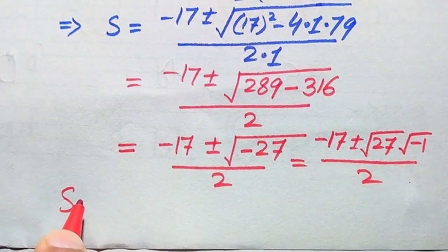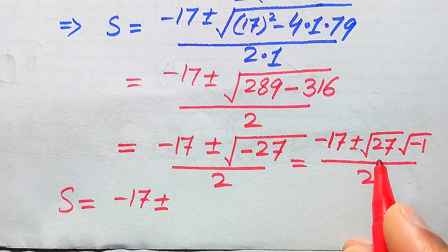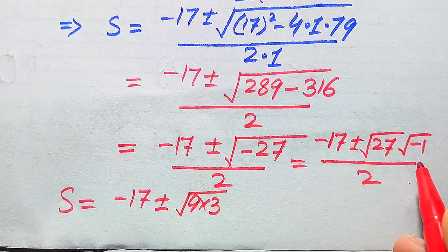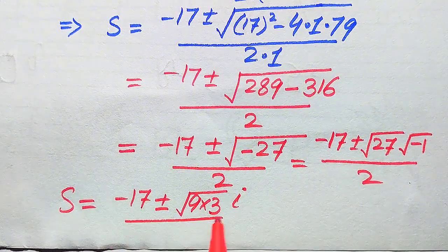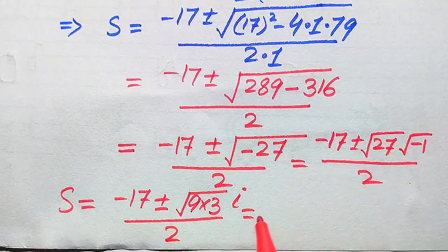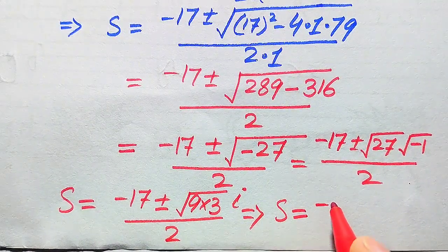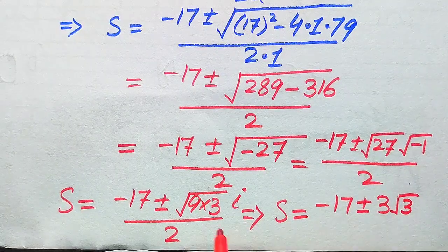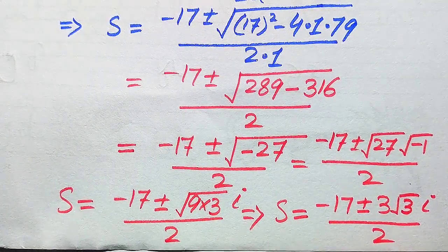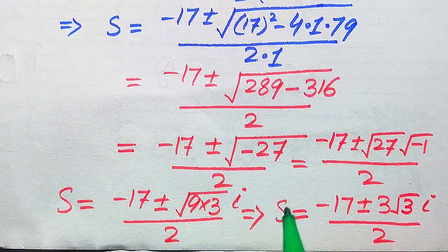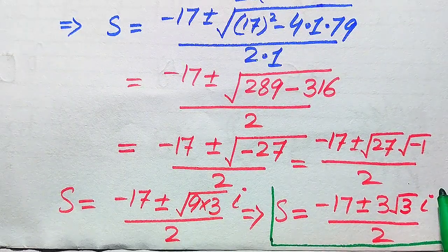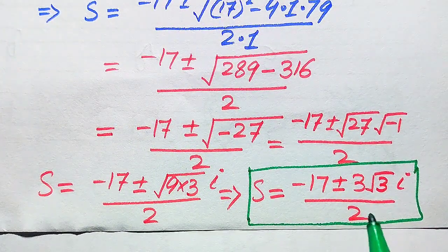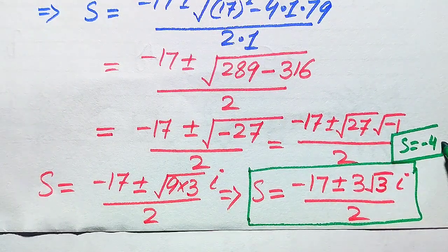We rewrite 27 as 9 × 3, and since √(−1) = i (iota), we get √(−27) = √9 × √3 × i = 3i√3. Therefore, s = (−17 ± 3i√3) / 2. These are the two complex roots of the given equation, along with the real root s = −4.